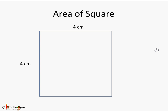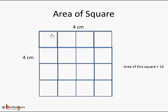We all know what is an area of a square. Here is a square where each side is 4 centimeters long. So what would be its area? If we divide this square into smaller squares each of 1 centimeter by 1 centimeter, then on this 4 centimeter side there will be 4 such squares, and the same way on this side also there will be 4 such rows. So the total would be 16 such squares, and the area of this square is 16 square centimeters.